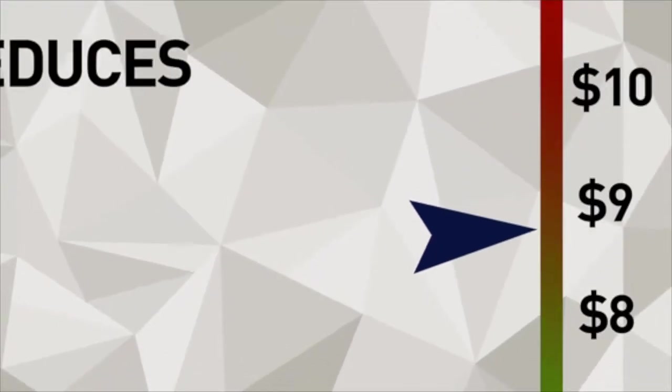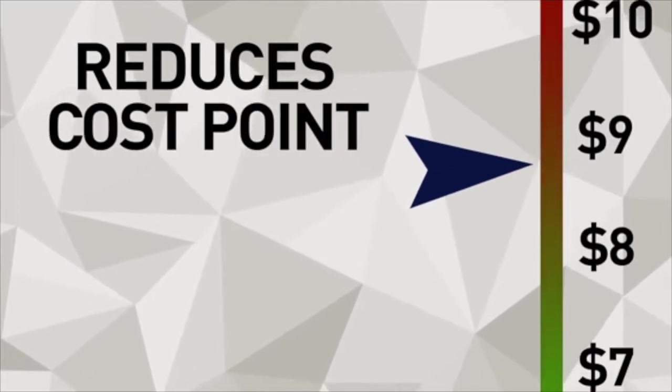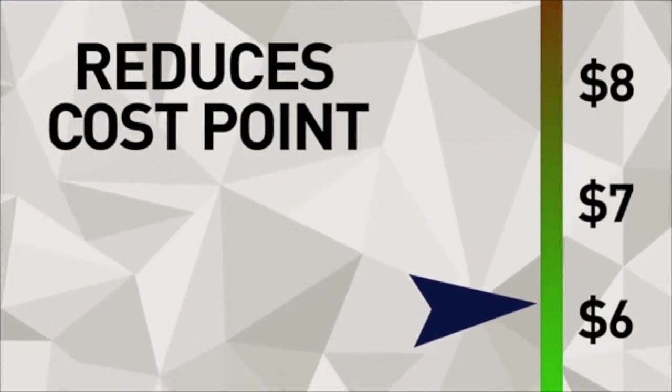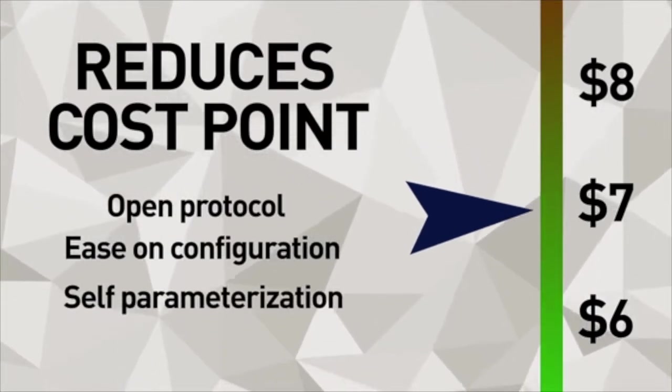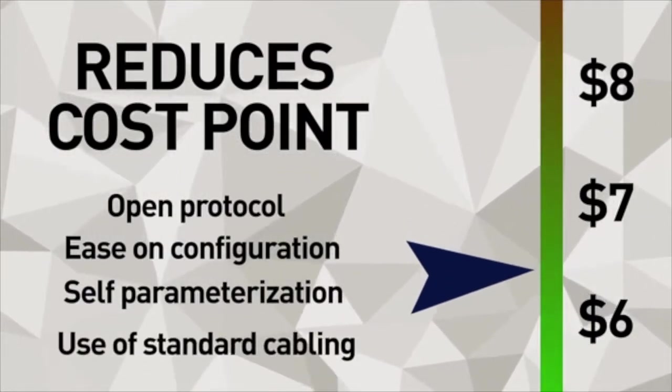IO-Link reduces the average IO cost point from eight to ten dollars to six to eight dollars via its open protocol, ease on configuration, self-parameterization, and the use of standard cabling.